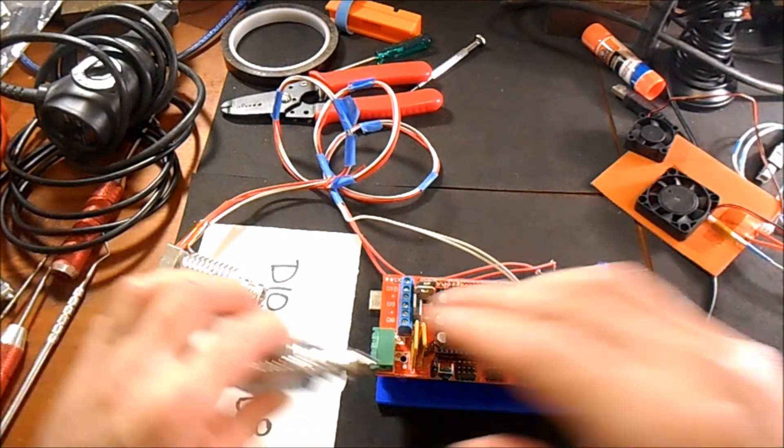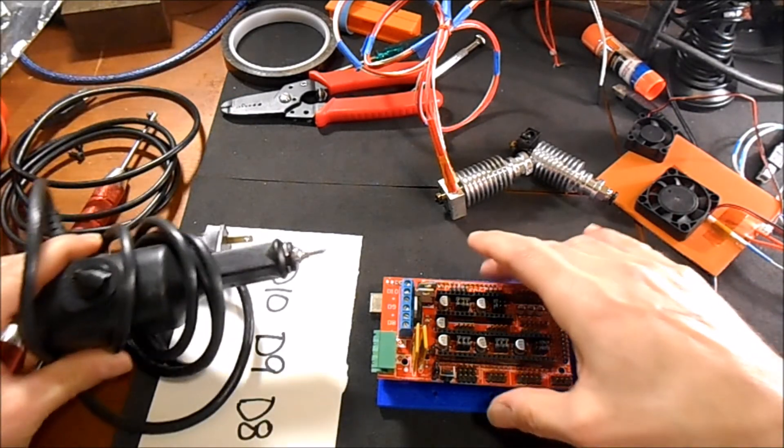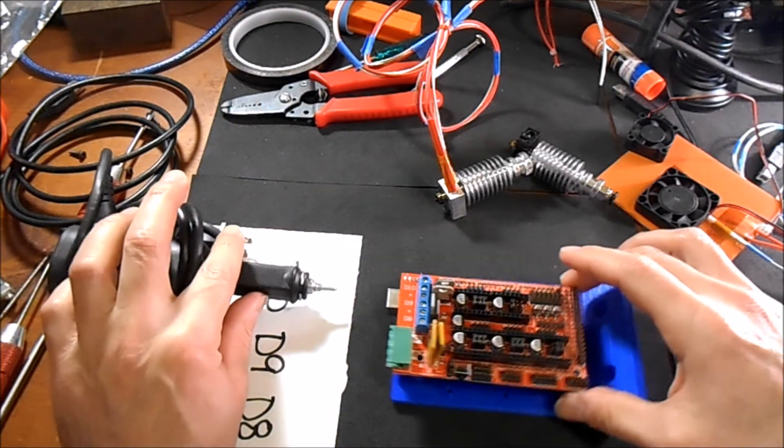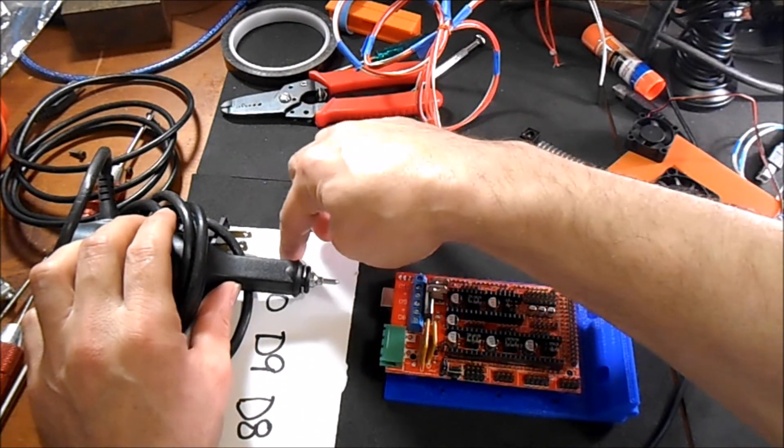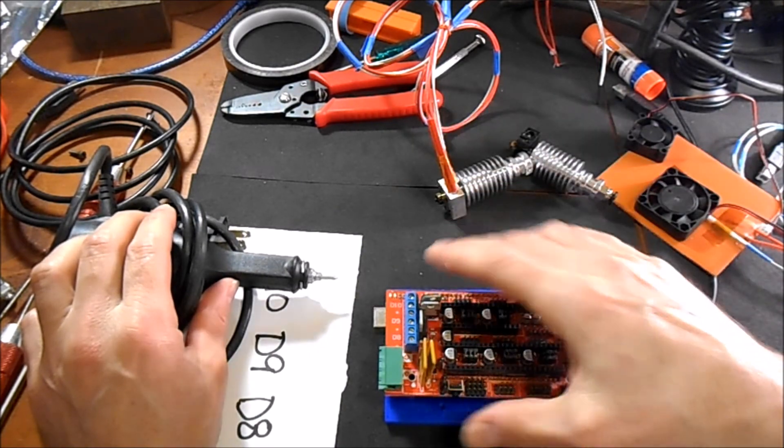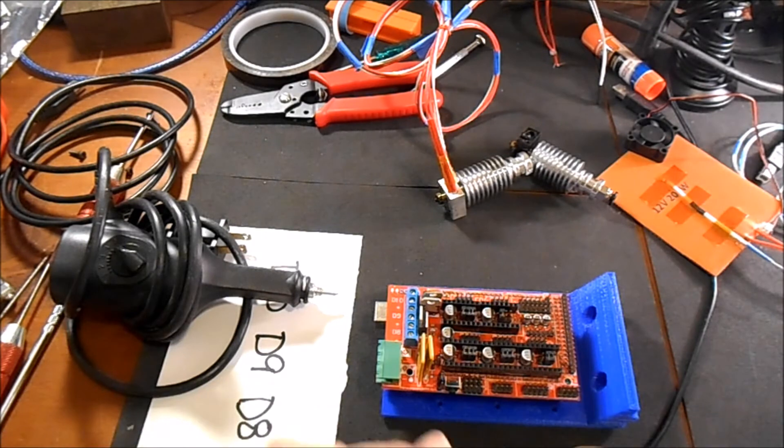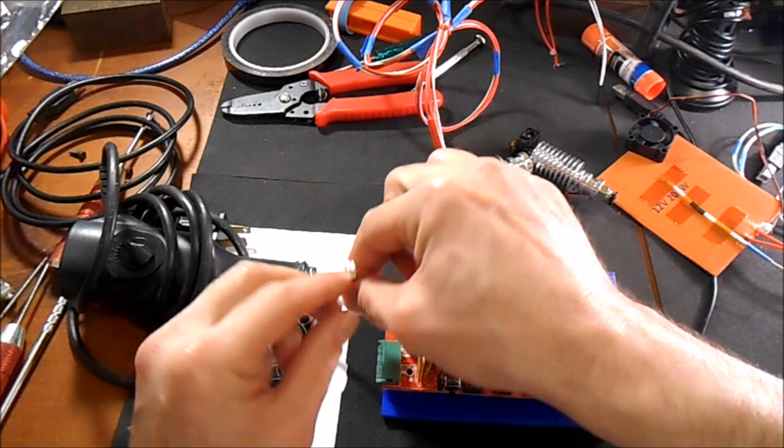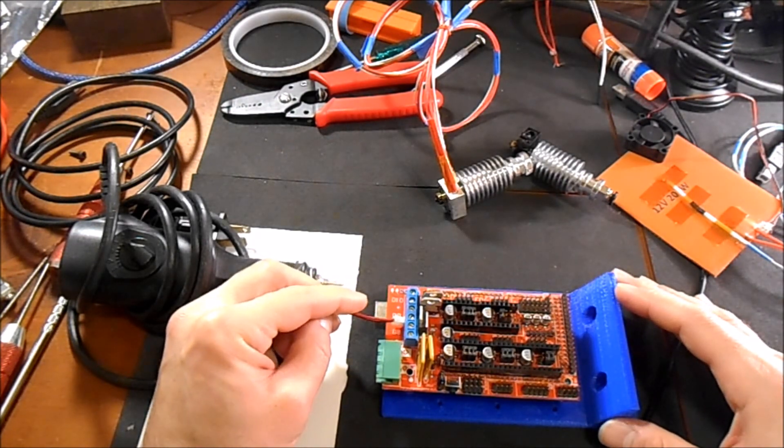And the very last configuration that we're going to have is a spindle controller. Now this is not the one we're going to be using, but it's a mock-up for this case. We're going to connect that to D10, so the wires will go into the D10 and then be screwed down. And then we'll have a fan controller which goes on D9 and will connect to the D9 connection right here.